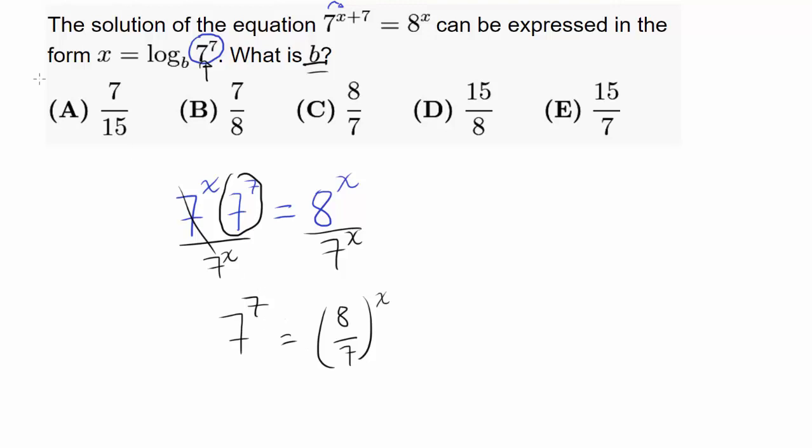We can apply our logarithm right away. Log base 8 over 7 of 7 to the 7th is x, because you have log base this expression and you're raising it to power of x, and you are getting 7 to the 7th out of it.